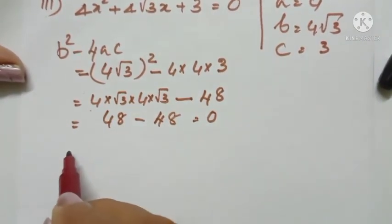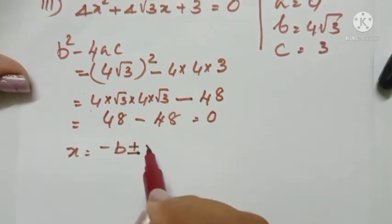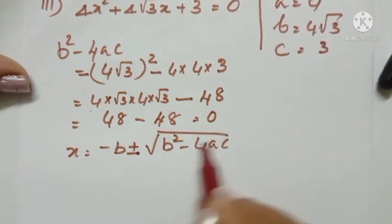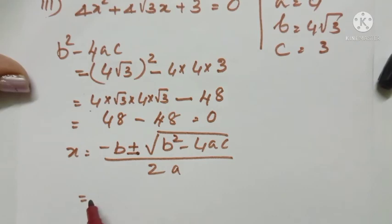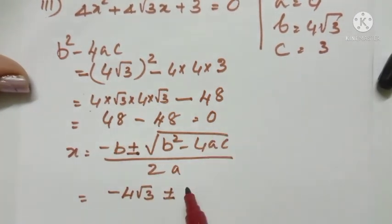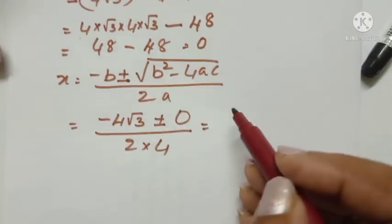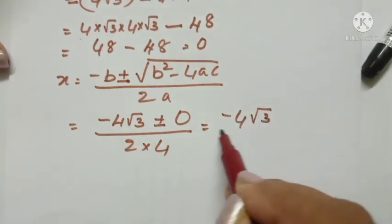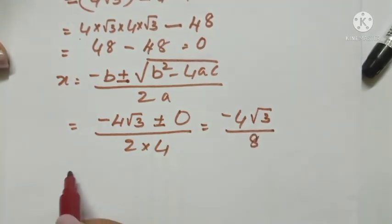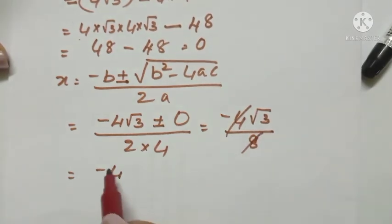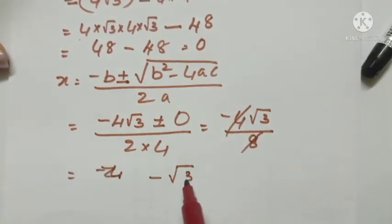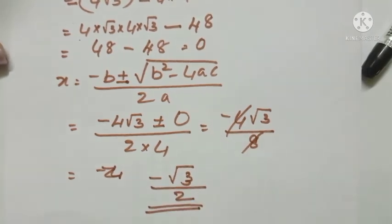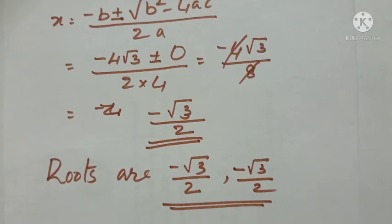Applying the quadratic formula: x = (-b ± √(b²-4ac)) / 2a. Since b = 4√3, minus b = -4√3, and b²-4ac = 0. So x = (-4√3 ± 0) / (2 × 4) = -4√3 / 8 = -√3/2. Therefore the roots are -√3/2 and -√3/2 — both roots are the same.